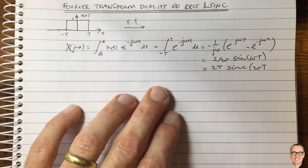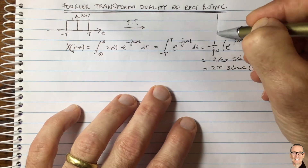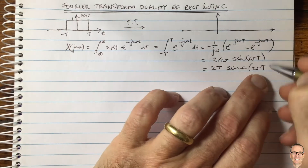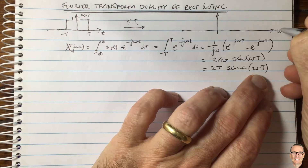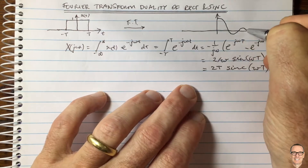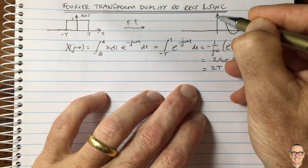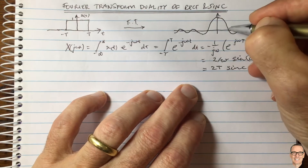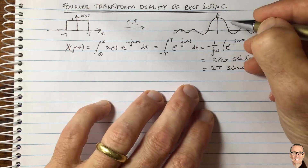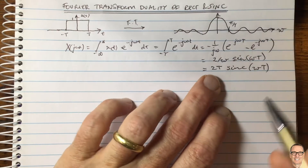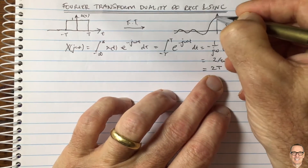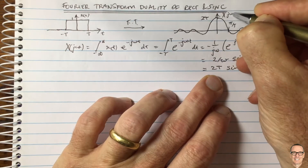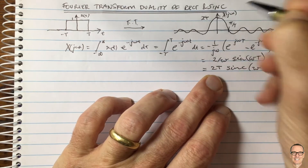So what does the sinc function look like? The sinc function is in the frequency domain — in omega. It oscillates and decays off. The first crossing point is at pi over capital T, and all subsequent crossings are equally spaced. The height of the function is two times capital T. This is the Fourier transform X(jω) for the square function.